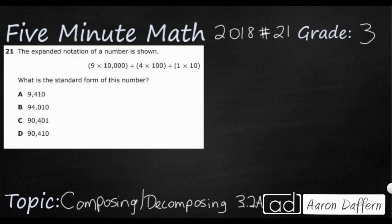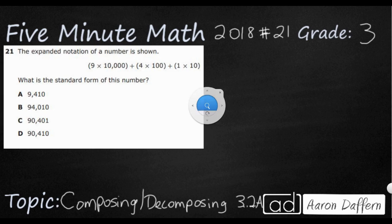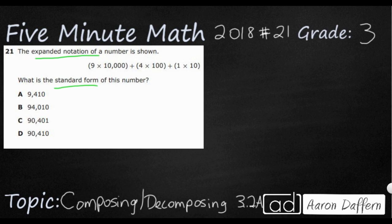So this is expanded notation. Expanded notation is kind of like, but not quite the same as expanded form. It takes a number and it blows it up — it expands it. Expanded notation is going to be the digit times the value of its place. That's why we have a times 10,000, times 100, times 10. So we're looking for the standard form. We've got four different options, and they all have a 9, a 4, a 1, and one or possibly two zeros. So let's see how we can solve this.